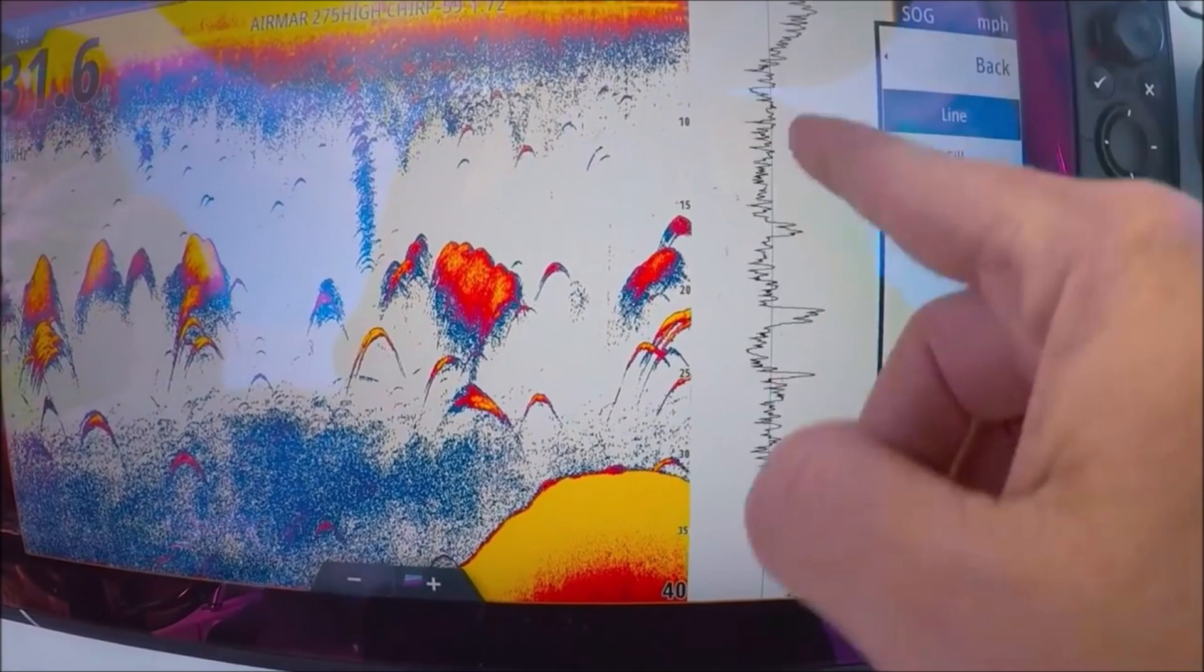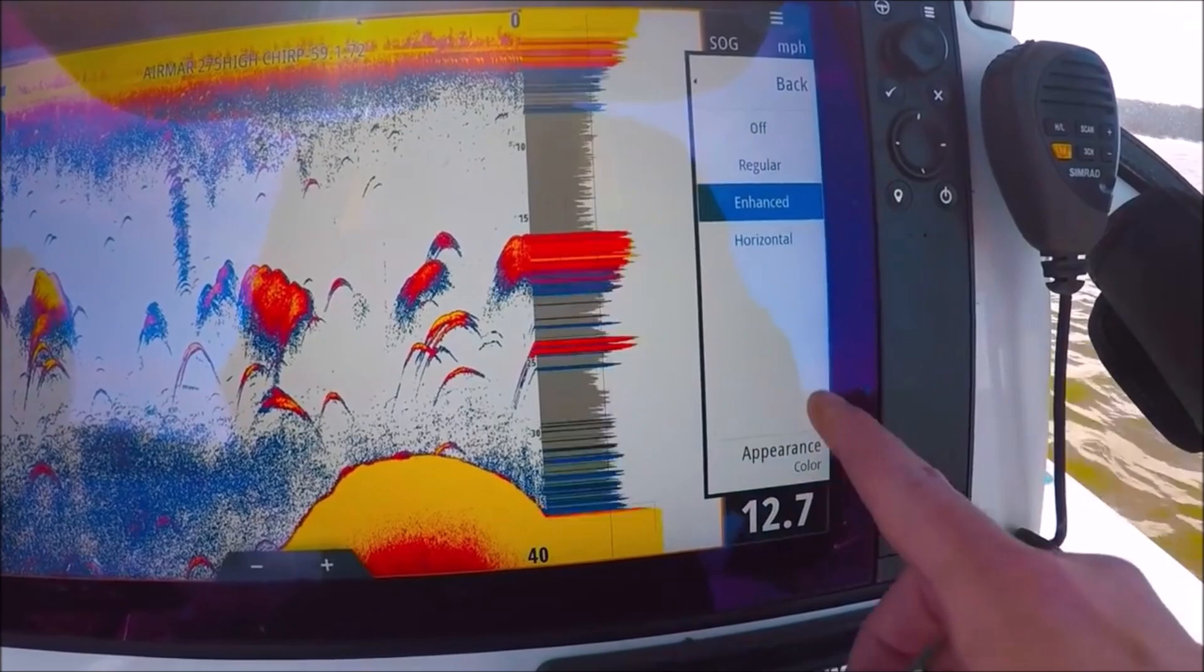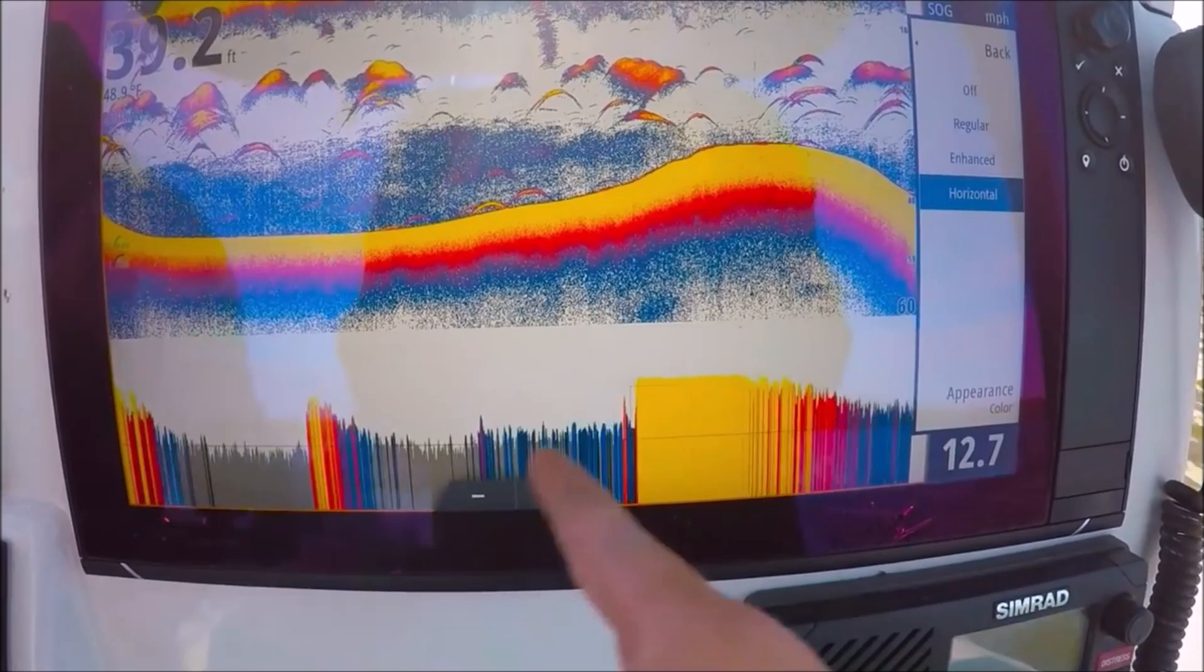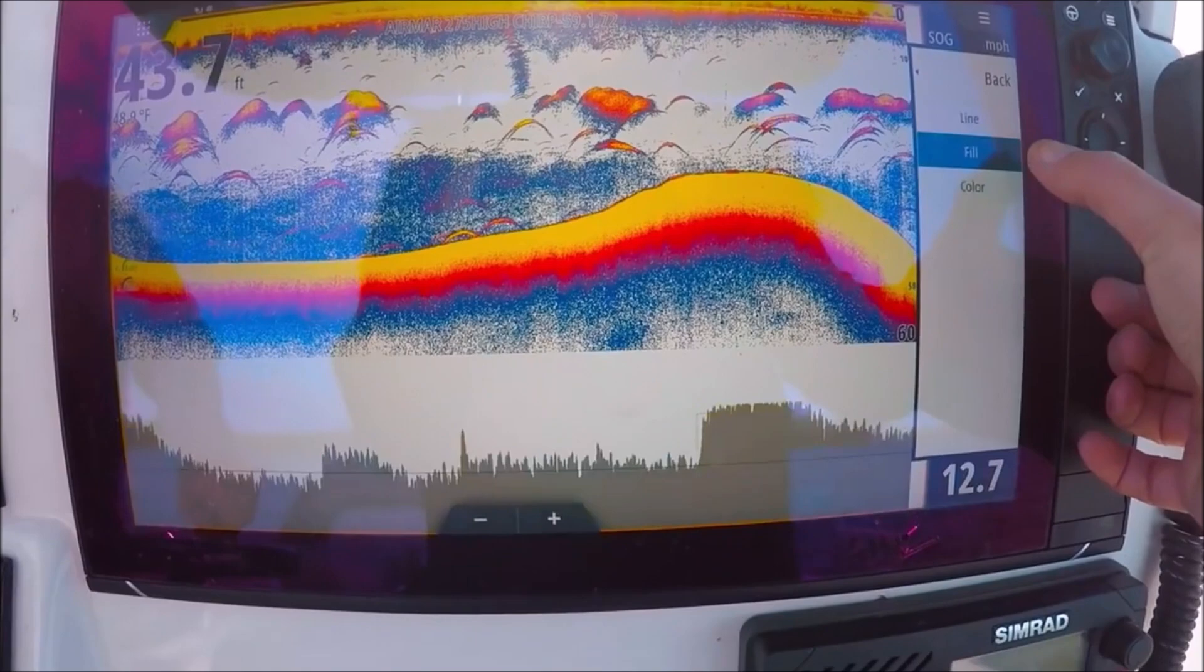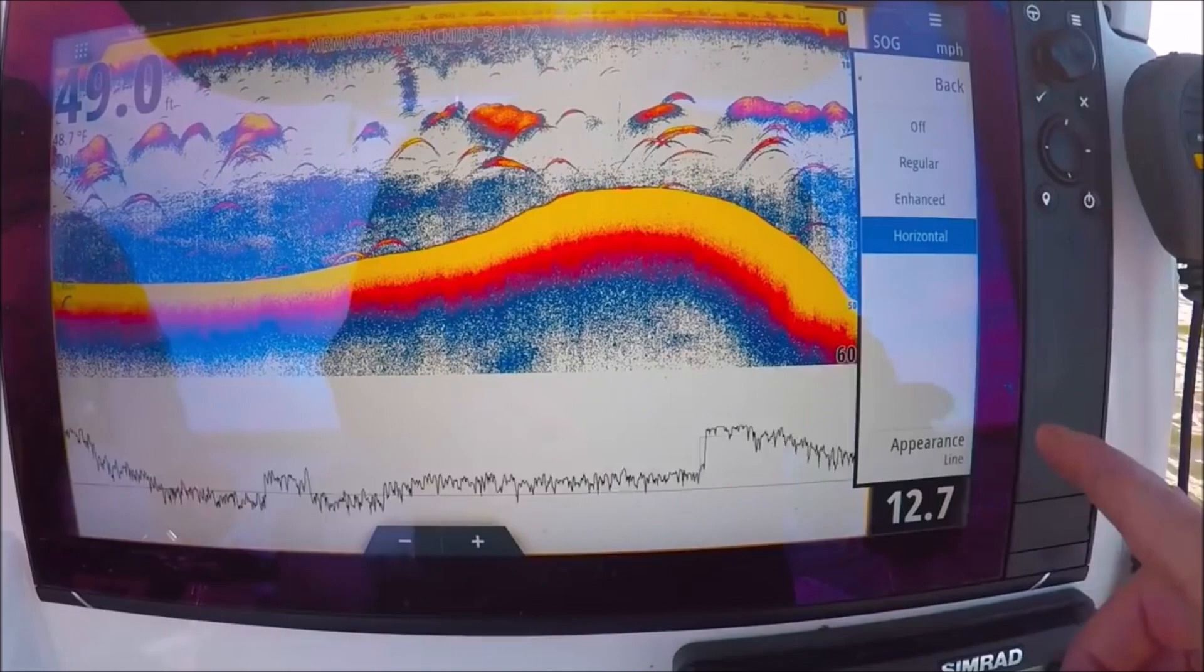We could also change the appearance. We can go to line, which is just the outside line of the A-scope. Fill, which is solid gray. And color, which uses every color of the palette - this is my favorite. We can also use a horizontal, which does the bottom of the screen. There's the full color. We could change the appearance just like we did before - fill and line. Let's go back. I'll leave it on enhanced and color.